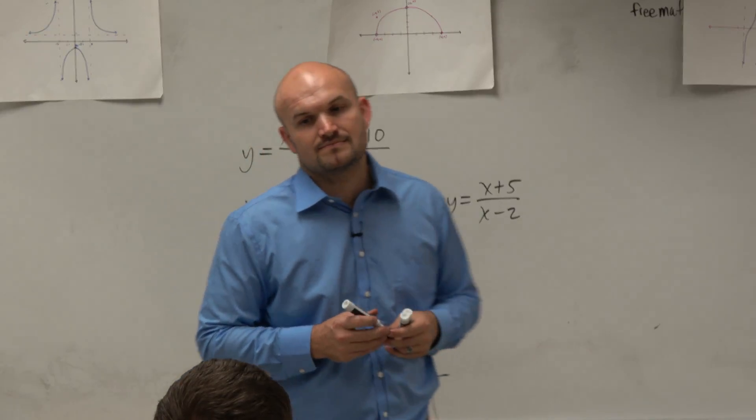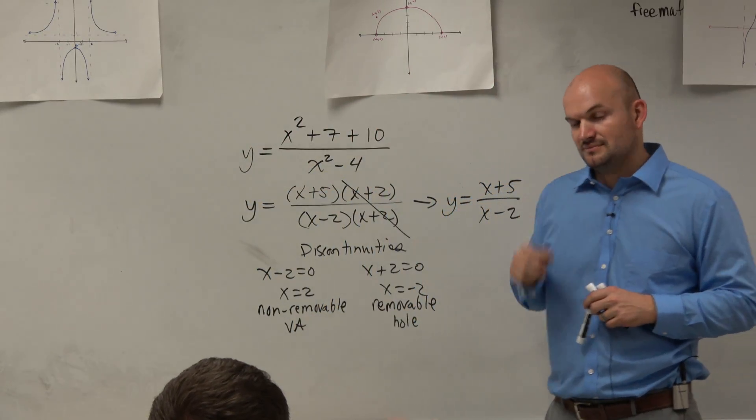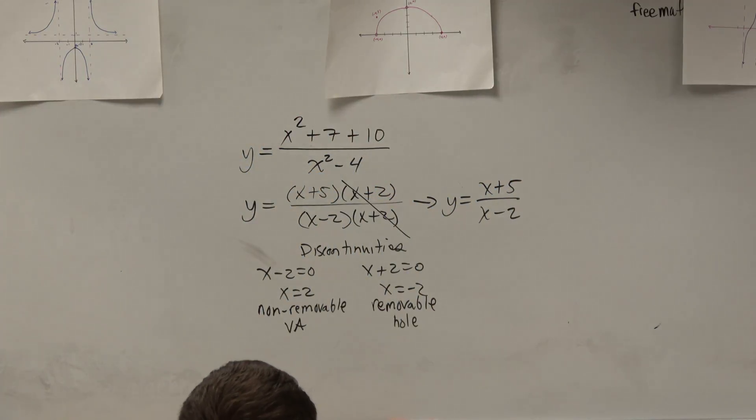So if it's removable, that means... It can be divided out. It can be divided out, yes. And that's really it. All right, non-removable couldn't be cancelled and still in the equation, right? And what?